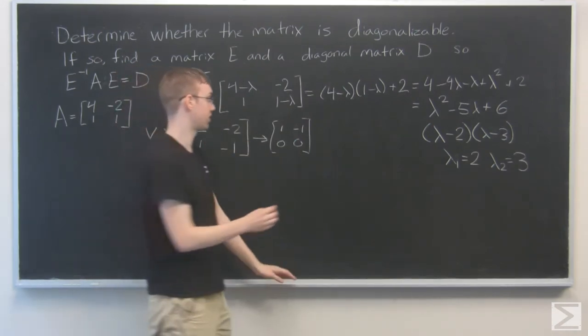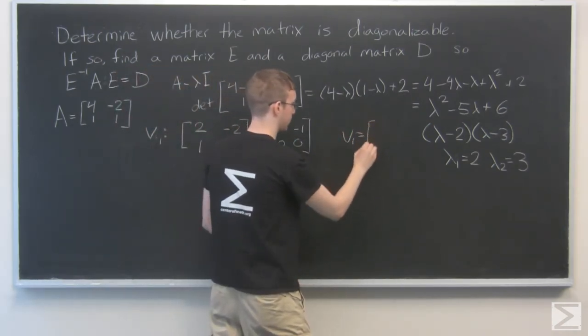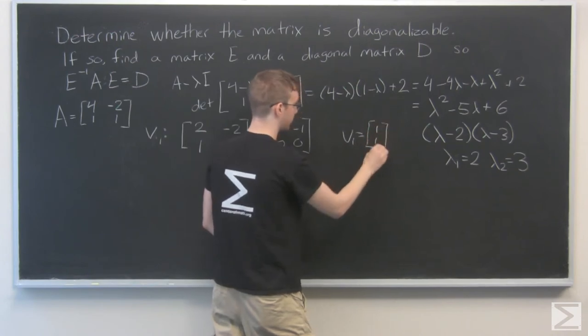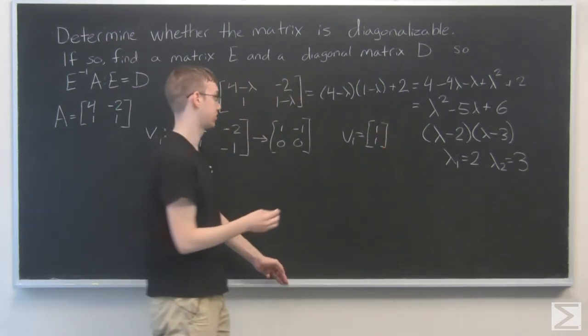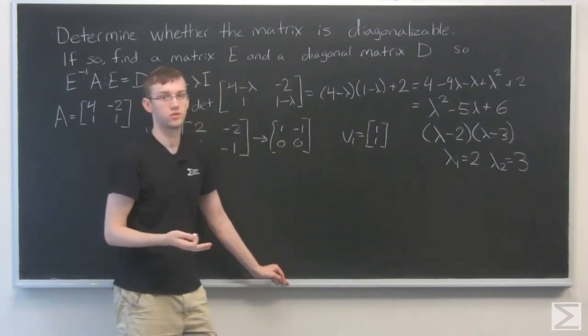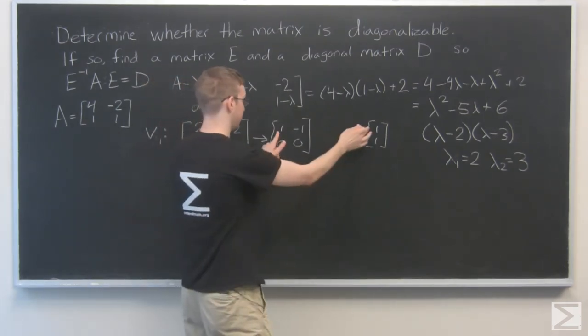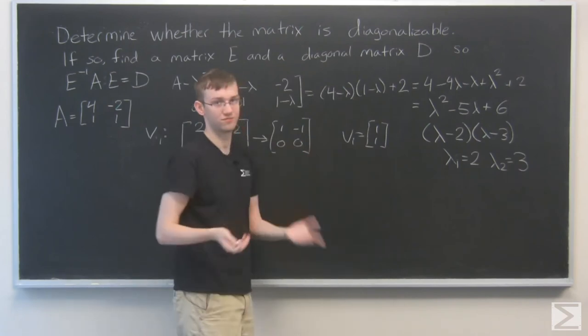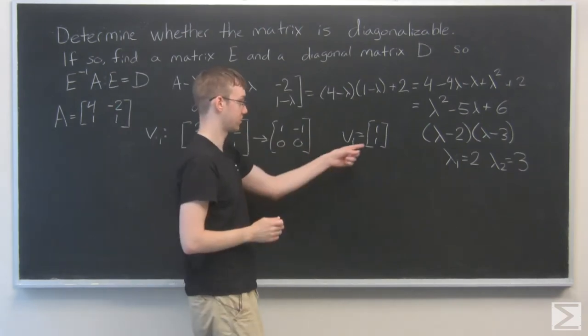And now we can easily see that these are multiples of each other, and that will just simplify to the matrix 1 minus 1, 0, 0. And this gives us our vector 1 is equal to 1, 1. And if you don't see how that works, notice that this matrix times the vector 1, 1 is going to equal just the 0 vector, because 1 times 1 plus negative 1 times 1, that's just equal to 0. So that's vector 1.